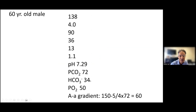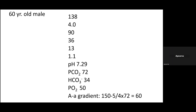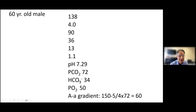A student answers: you could have chronic respiratory acidosis with metabolic compensation. The instructor clarifies: in acid-base disorders that are respiratory, we just say acute or chronic — we don't use the word 'compensation' for respiratory disorders.